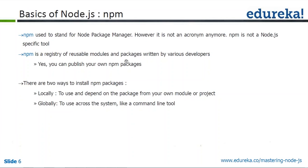There are typically two ways to install NPM packages. You can install it locally — we'll see an example of that where we'll just put it in a folder and install it for a single project. And then you can use it globally, where it installs it for all users across the server.